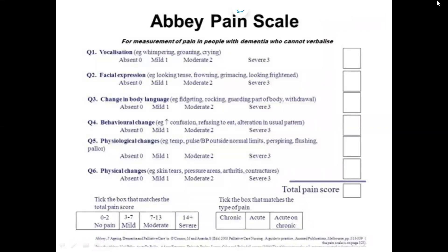This is the Abbey Pain Scale. The difference with this tool is that it's more specific with scoring, which sometimes makes it easier because people can see the progression of pain or the impact of pain management. You've got six questions — very similar descriptors to the first tool: vocalization, facial expression, change in body language, behavioural changes, physiological changes, and physical changes. You score each as absent at zero, mild is one, moderate is two, and severe is three — scoring how you perceive that person.